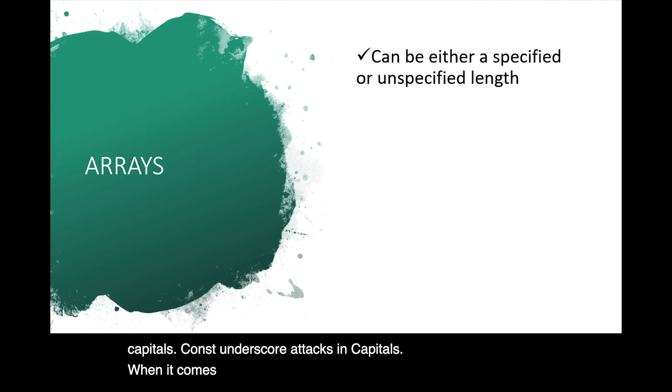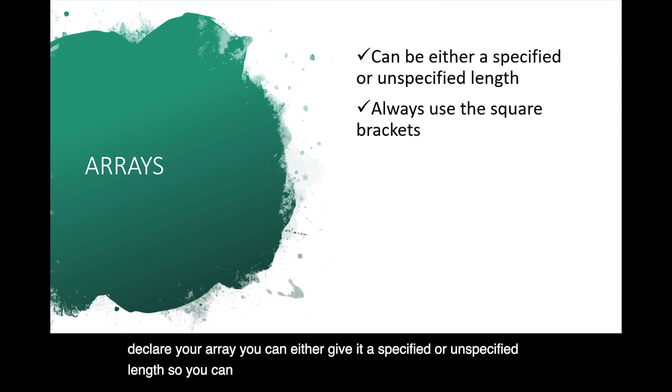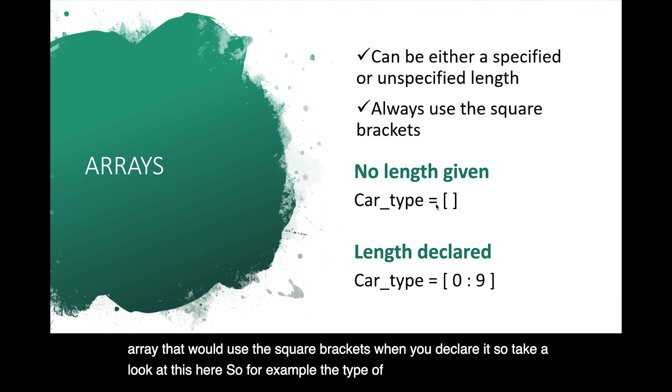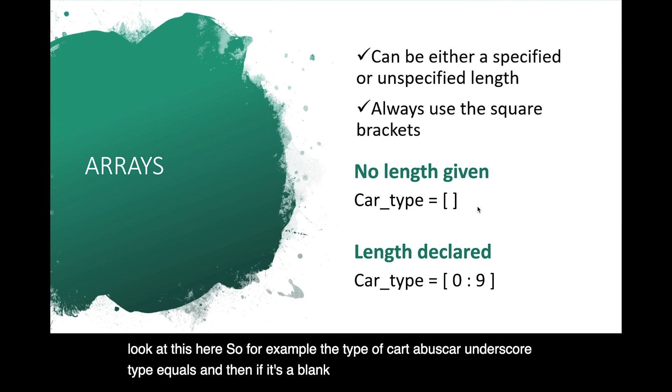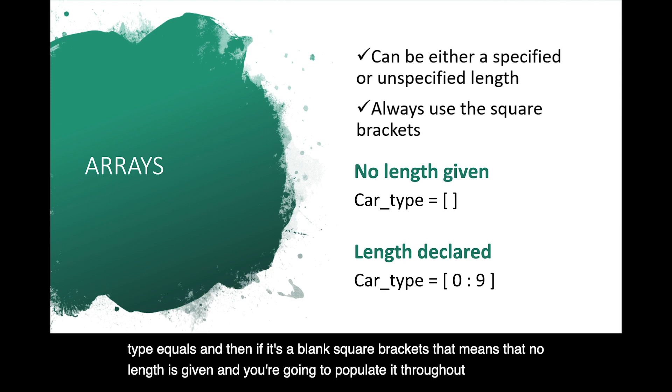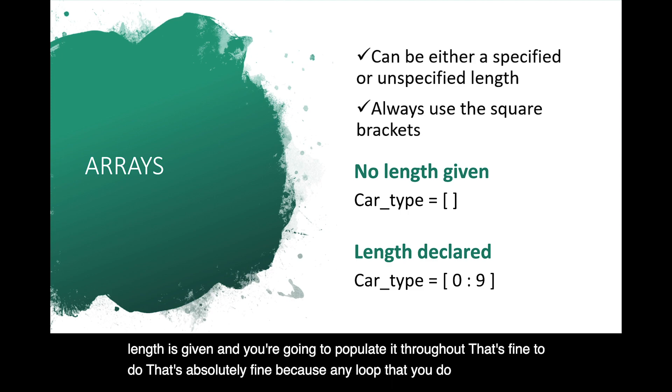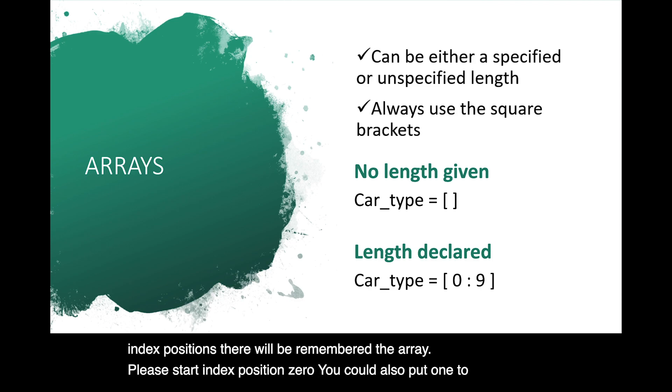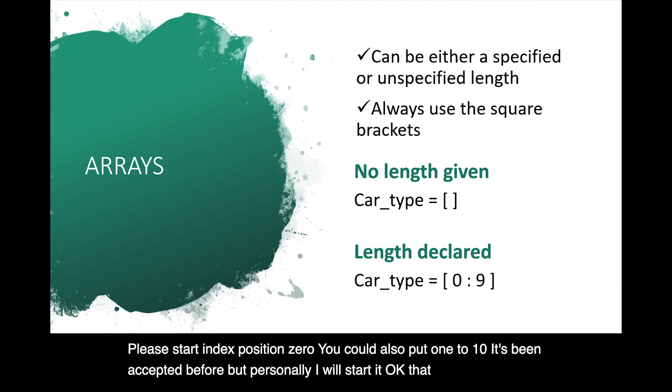When it comes to arrays, there are two different ways you can declare your array. You can either give it a specified or unspecified length. So you can create a blank array, or you can outline that it's going to have 10 index positions within it. Always use the square brackets. That's how we identify that it's an array. It would use the square brackets when you declare it. So take a look at this here. So for example, the type of car to be used, car underscore type equals, and then if it's a blank square brackets, that means that no length is given, and you're going to populate it throughout. That's fine to do. That's absolutely fine, because any loop that you do later that populates it will evidence your ability to create the array to the correct size, or you can declare it in advance and indicate how many index positions there will be. Remember that arrays start at index position zero. You could also put one to ten. It's been accepted before, but personally, I would start at zero, because that really evidences that you understand that arrays begin at zero.